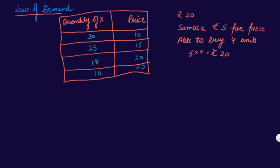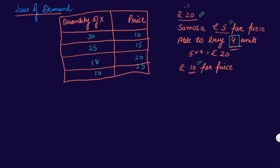So your purchasing power is 20 rupees, the price of the product is rupees 5, and what you can buy is four units of that product. Now let's say the price increases to rupees 10 per piece. Your income is still the same, so you will be able to buy only two units of that product.